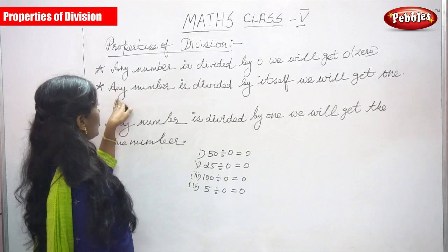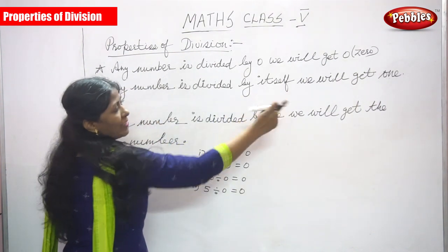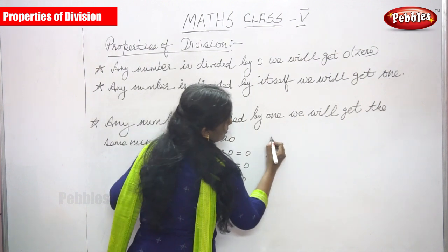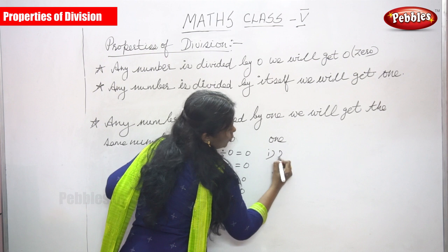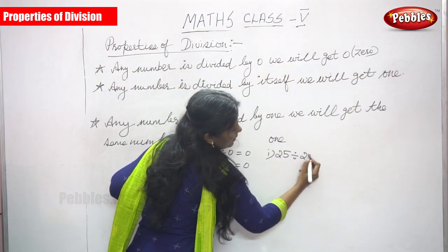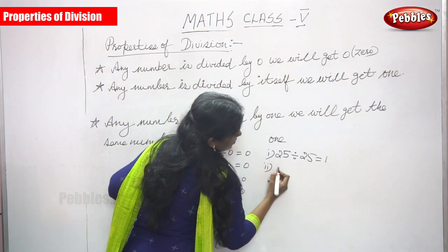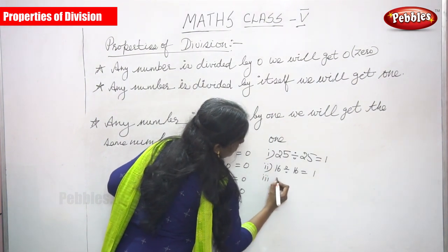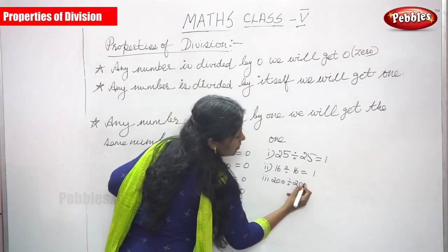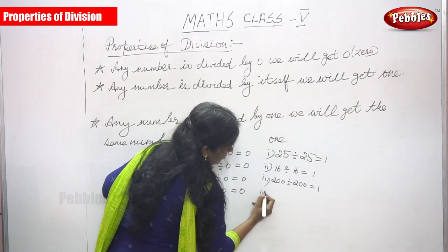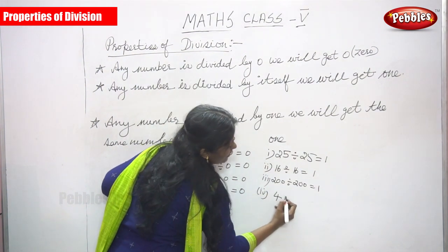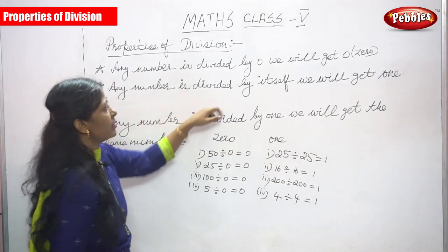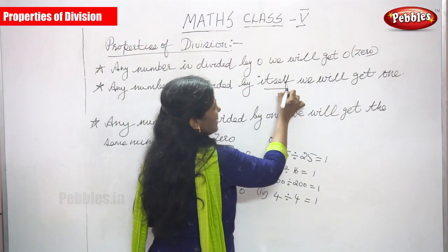Next property: any number divided by itself, we will get one. For example, 25 divided by 25 you get one. Next, 16 divided by 16 you can get one. 200 divided by 200 you can get one. Last but not least, four divided by four you can get one.